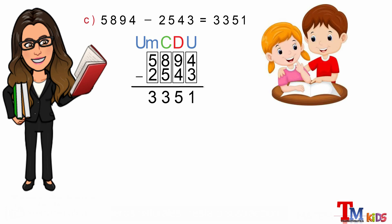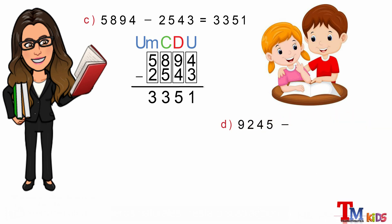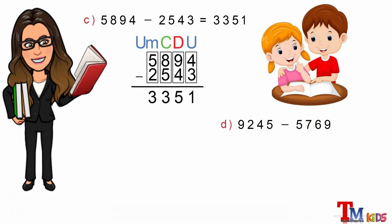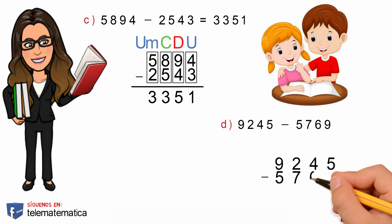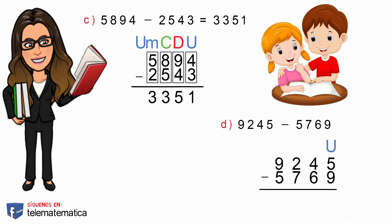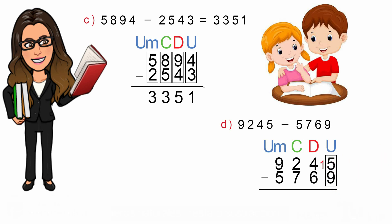Y como último literal, Literal D: 9245 menos 5769. Comenzaremos escribiendo los números verticalmente con el minuendo encima y el sustraendo debajo. Identificaremos la columna de las unidades, la de las decenas, la de las centenas y la de las unidades de mil. Comenzamos por la columna de las unidades, pero no podemos restarle 9 al 5, entonces le pedimos una prestada a la decena. El 5 se transforma en 15 y el 4 en 3. Luego restamos 15 menos 9 es igual a 6.